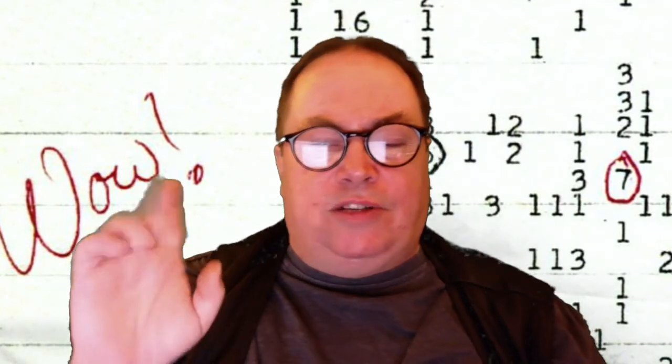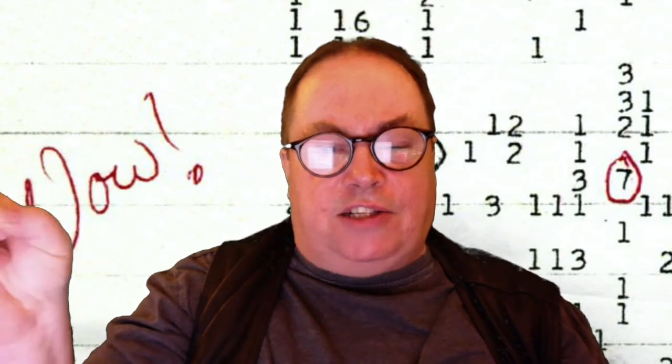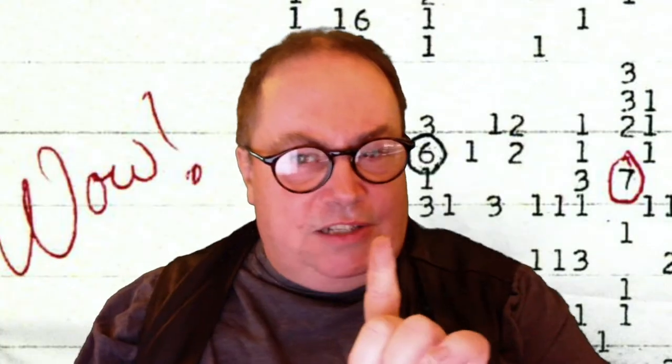Question 5: The signal appeared to come from the direction of which constellation? Sagittarius, Cassiopeia, or Ursa Minor. That's today's questions.